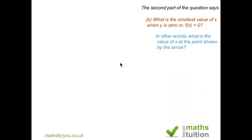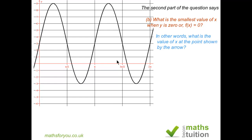The second part of the question says what is the smallest value of x when y is 0 or f(x) is 0. So we are actually looking at the point marked on the graph.